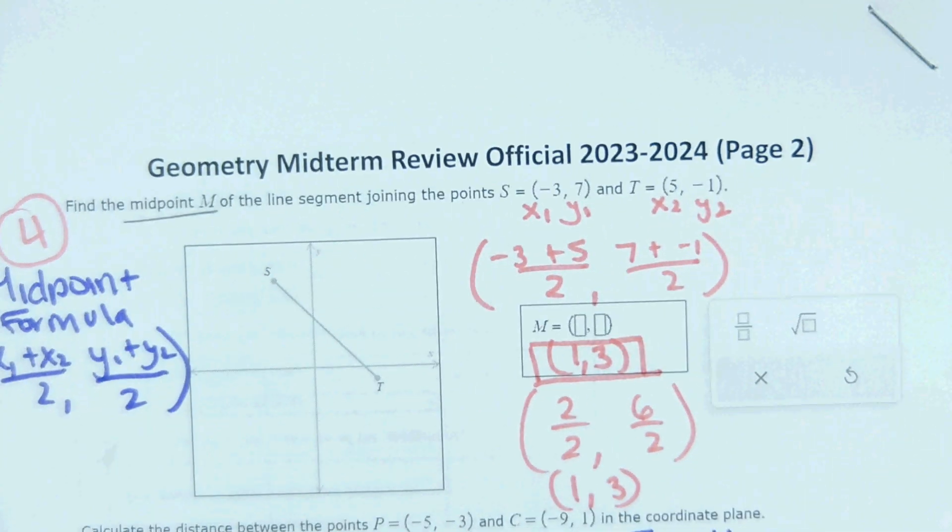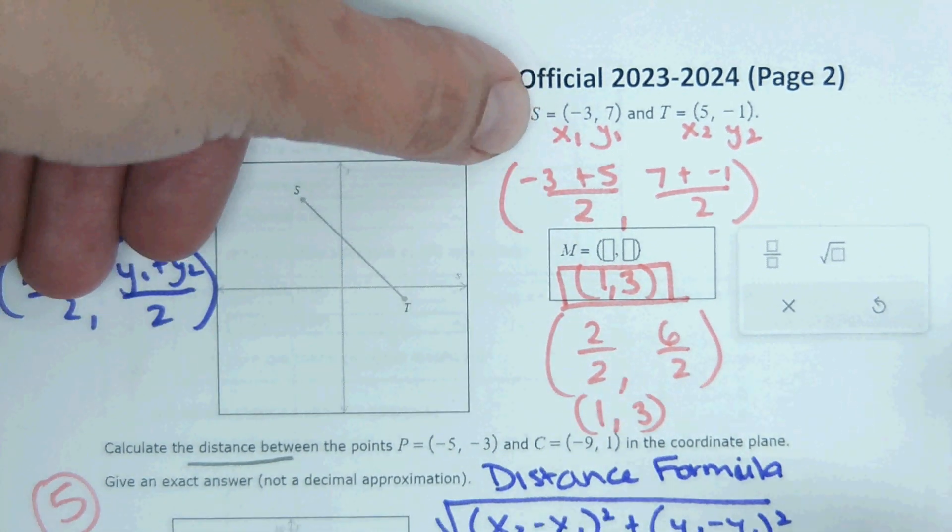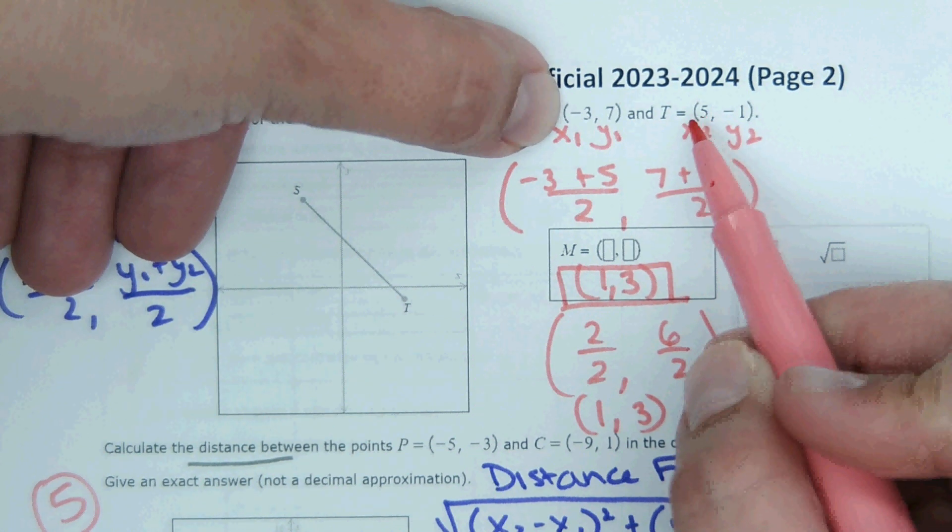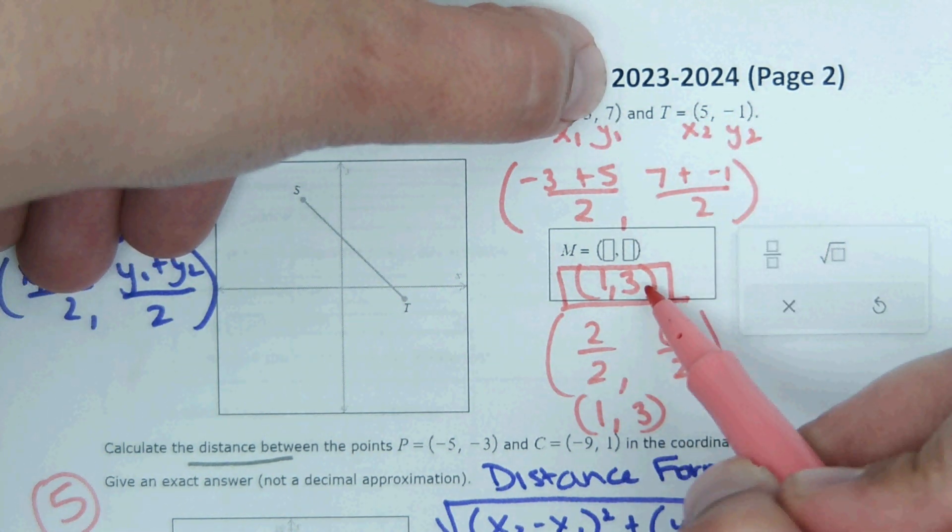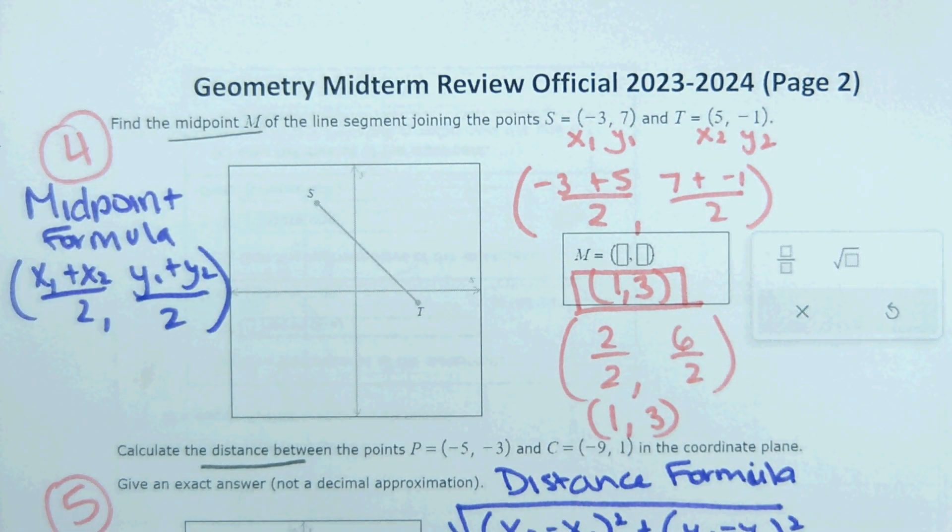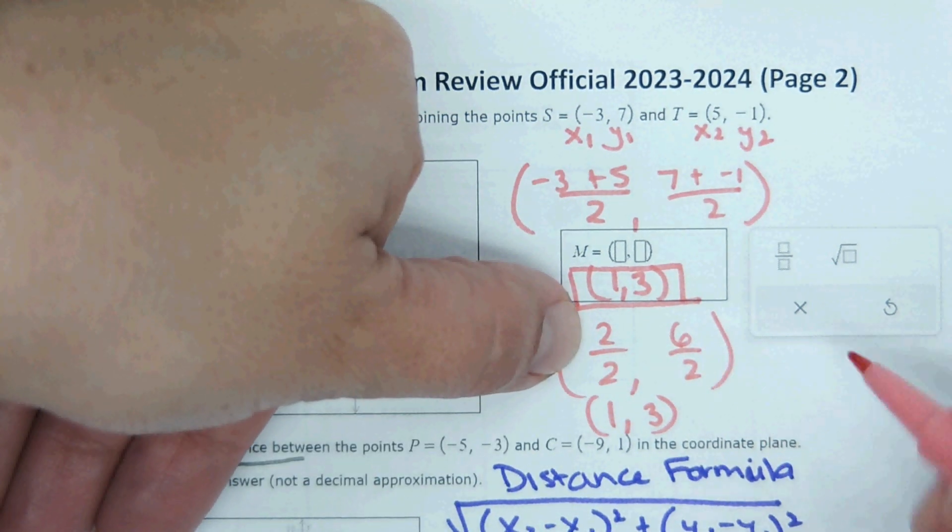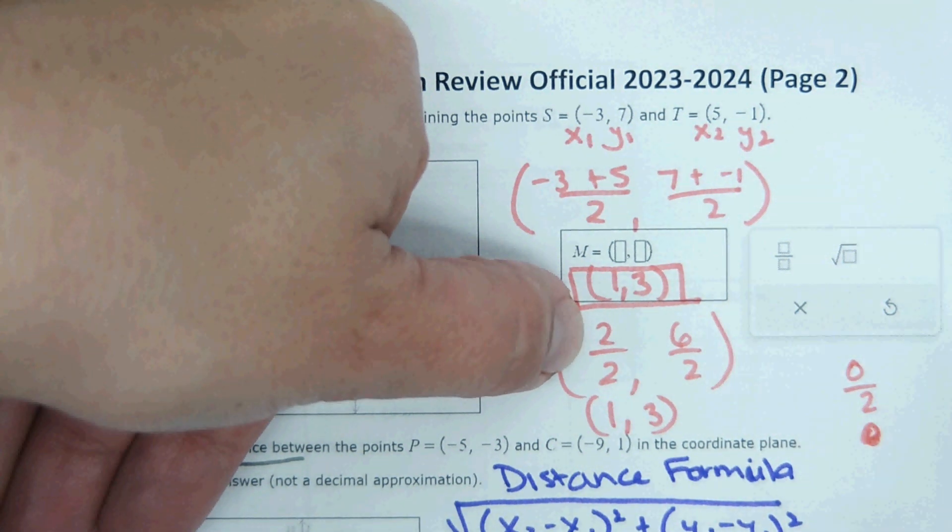And you can always check your work just based on the concept. You're looking for the middle number between your x's. So, the middle between negative 3 and 5 makes sense that it's 1. The middle between 7 and negative 1, it makes sense that the middle would be 3. Something that people stumbled upon is if you get something like 0 over 2, that just equals 0. It's fine. Just 0 divided by a number is just 0. So, if that happens, it's just 0.